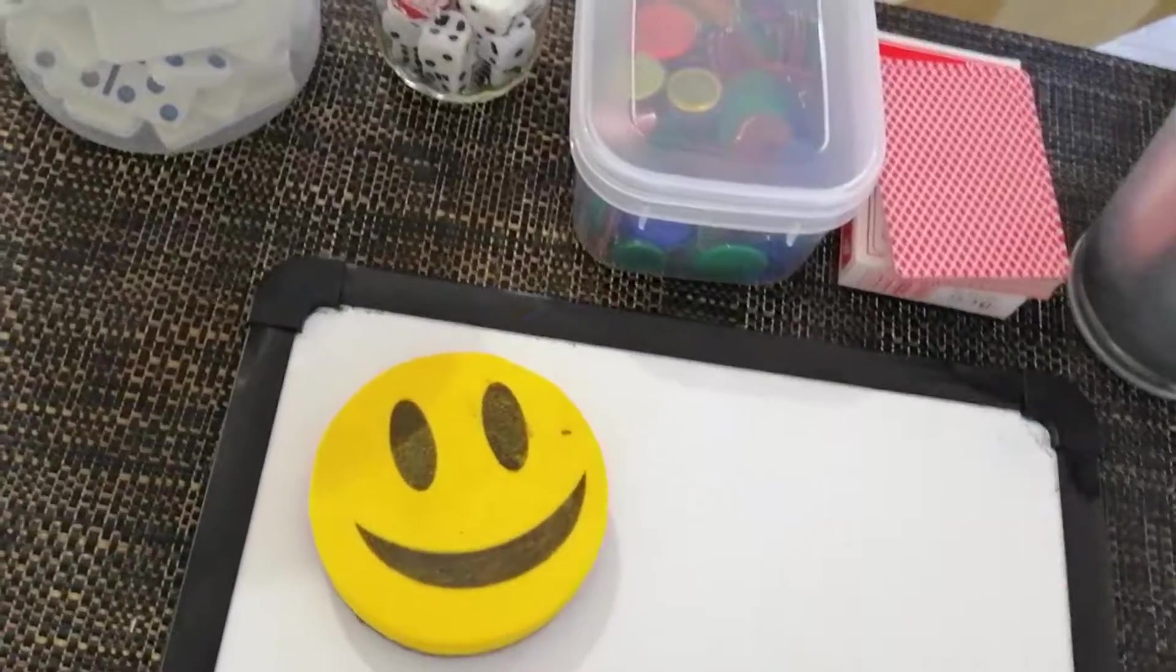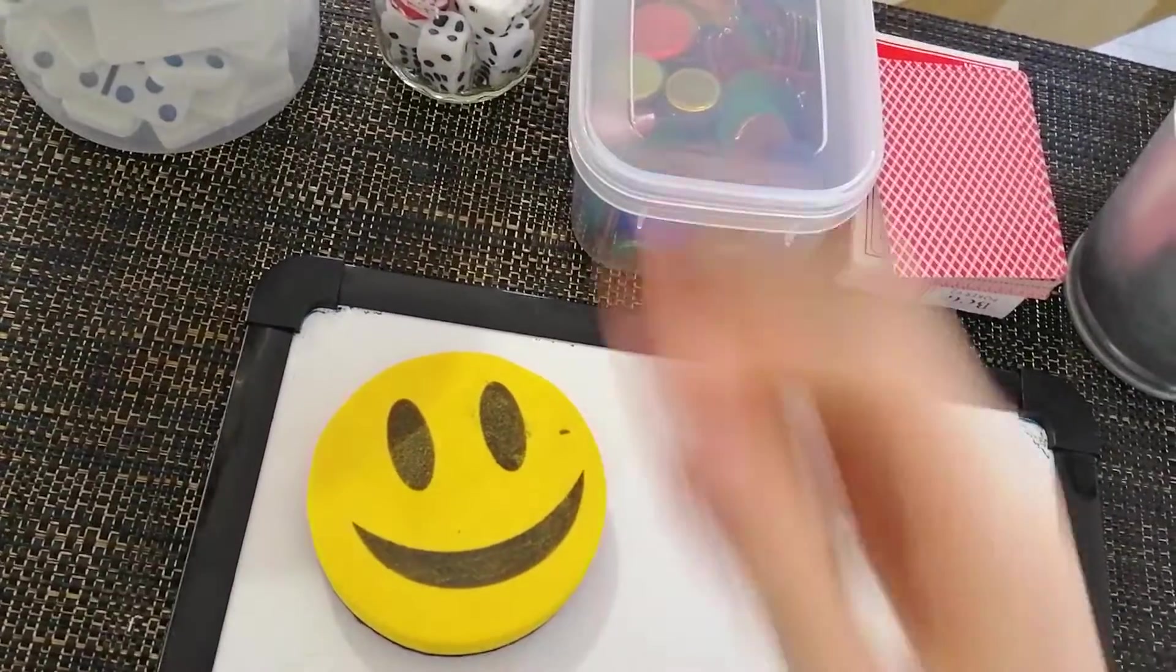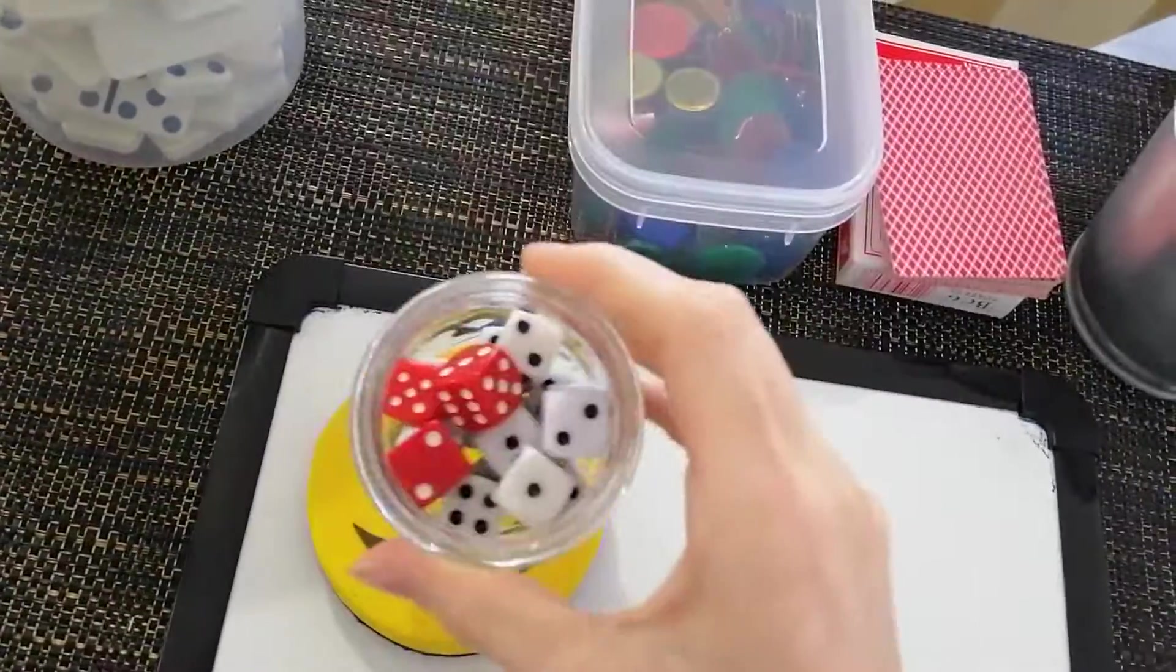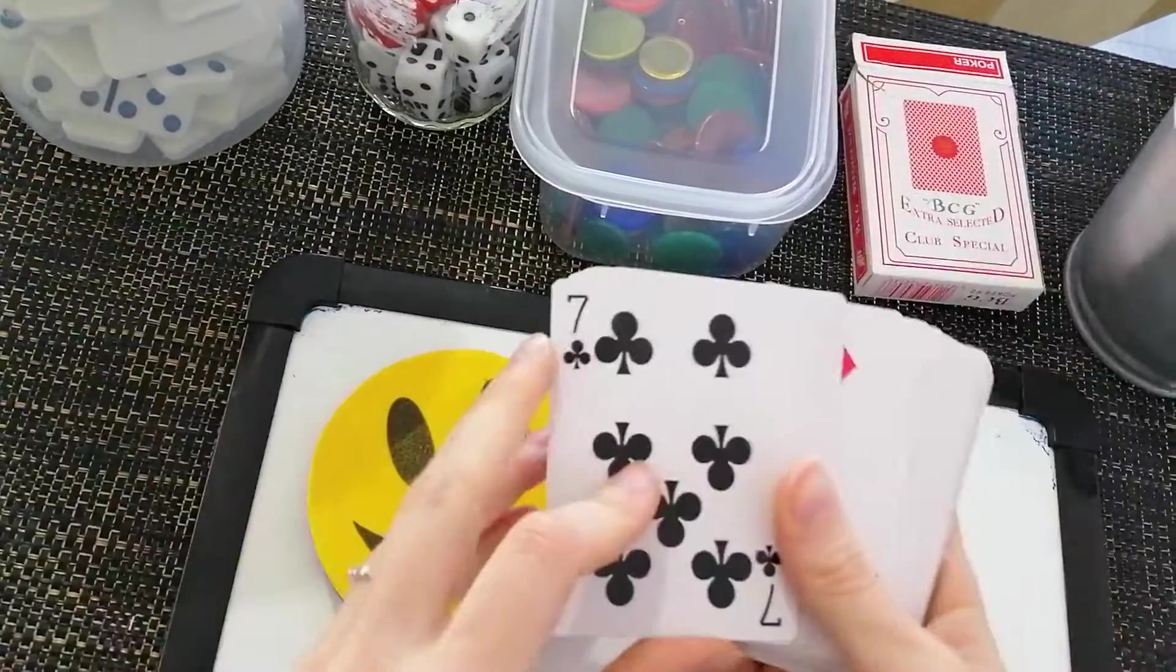So I have my whiteboard, I have my texter and rubber, I have some dominoes, I have some dice, I have some counters and I have some playing cards.